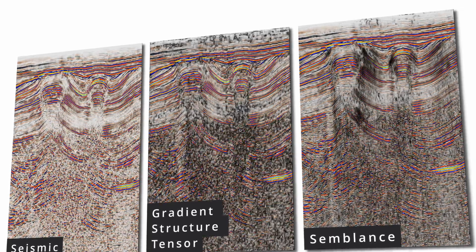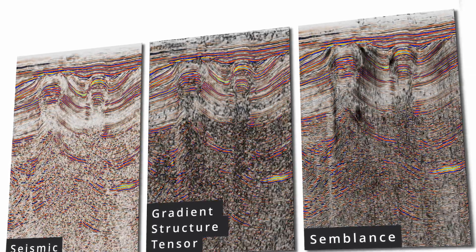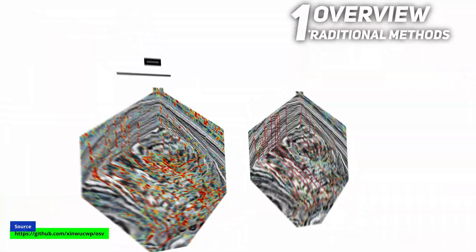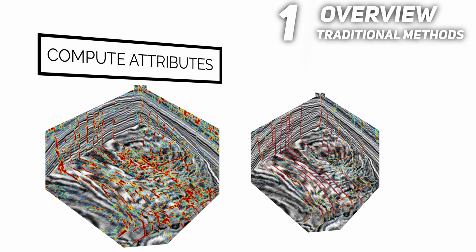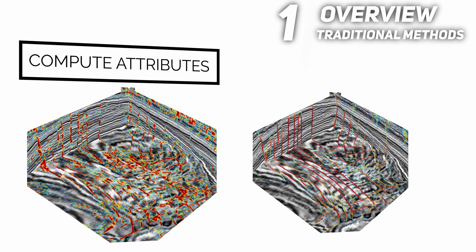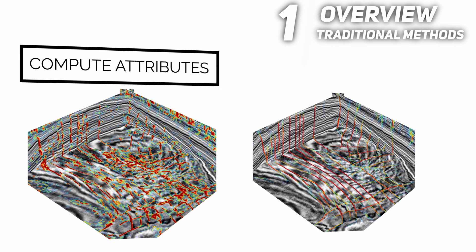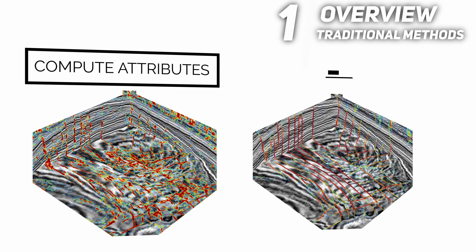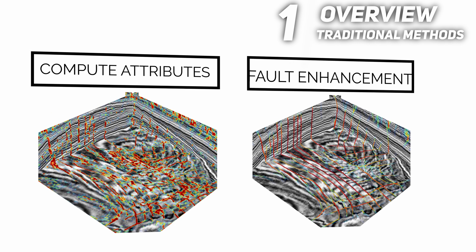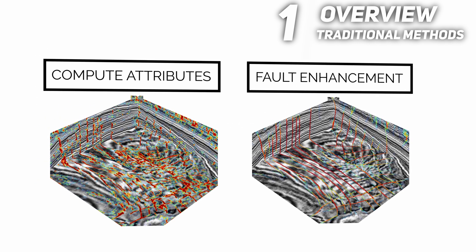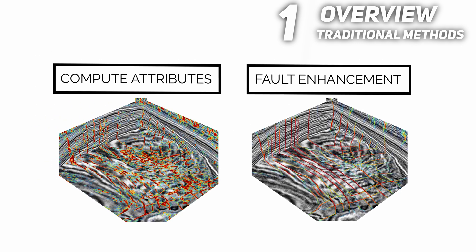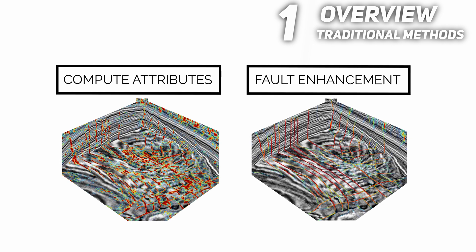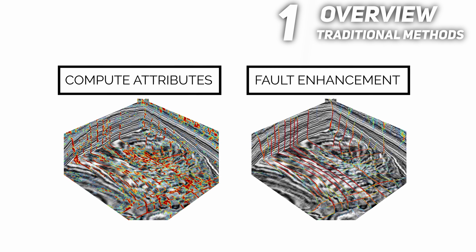In general, fault detection consists of two steps. First, collect a set of seismic attributes that highlights faulting. Second, perform fault enhancement, which sharpens the image of faulting while suppressing or removing non-faulting features.